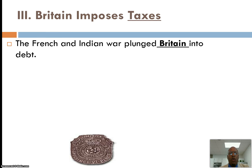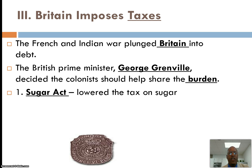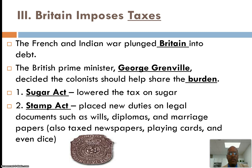The French and Indian War was very costly and put Great Britain into debt. What better way to make up for that than to tax the colonists — after all, Britain fought the war to protect them and give them the ability to expand. Some of the taxes instituted included the Sugar Act, which lowered the tax on sugar, and the Stamp Act, which placed new duties on legal documents such as wills, diplomas, and marriage papers, and also taxed newspapers and playing cards. Essentially, everything that was a part of everyday life was taxed through the Stamp Act.